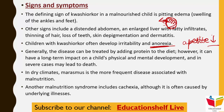Marasmus is a more frequent disease associated with malnutrition, especially in dry climates, because there the intake of energy and calories is insufficient. Another malnutrition syndrome includes cachexia, which occurs due to an underlying illness.